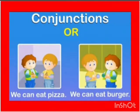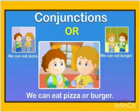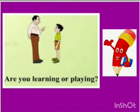We can eat pizza. We can eat burger. Now, these are two different sentences. How to make it one sentence? By adding the conjunction 'or'. We can eat pizza or burger. Are you learning or playing? Over here, two action words are given — learning and playing — so we join them using 'or'.